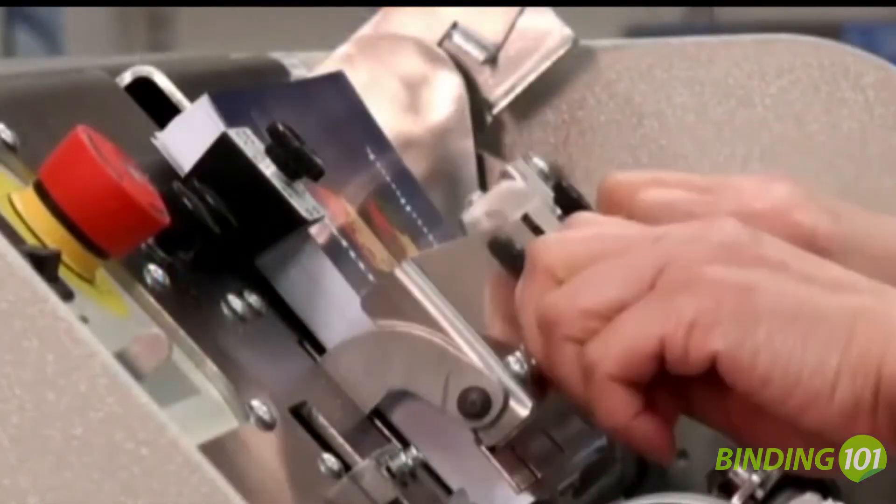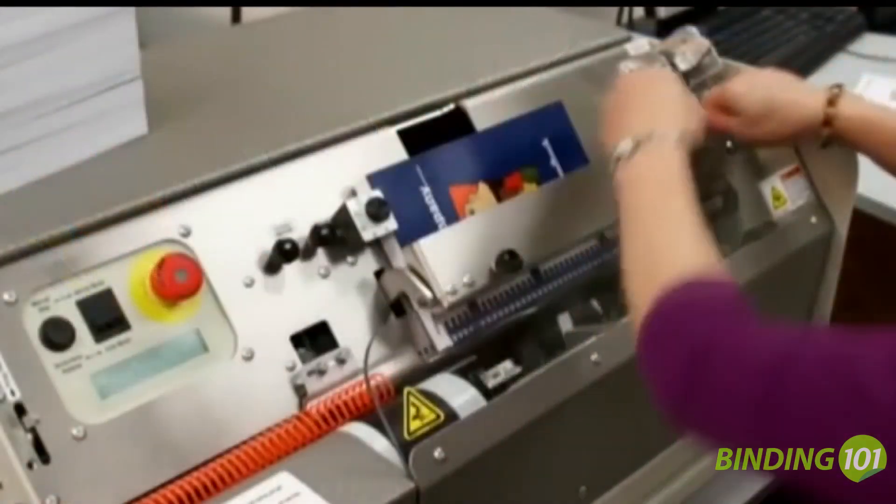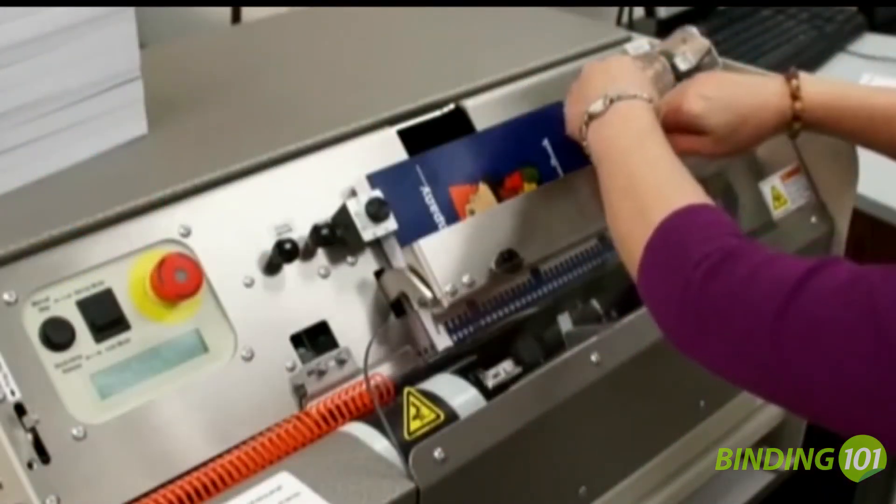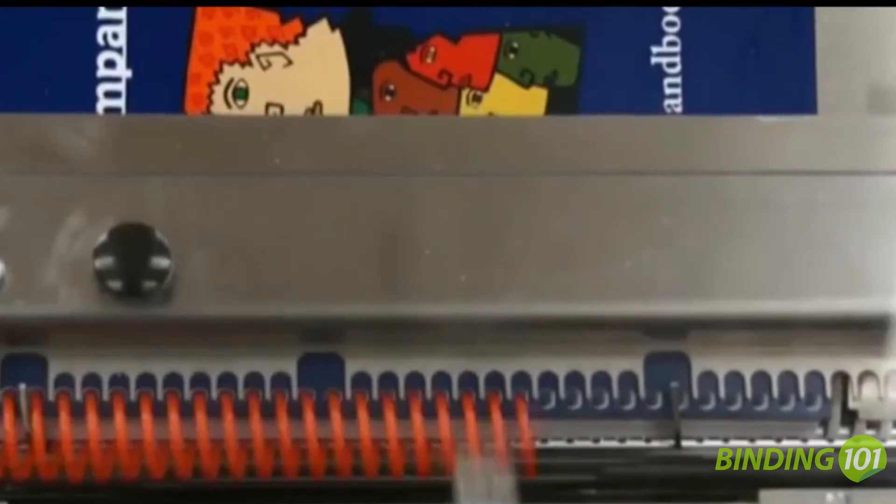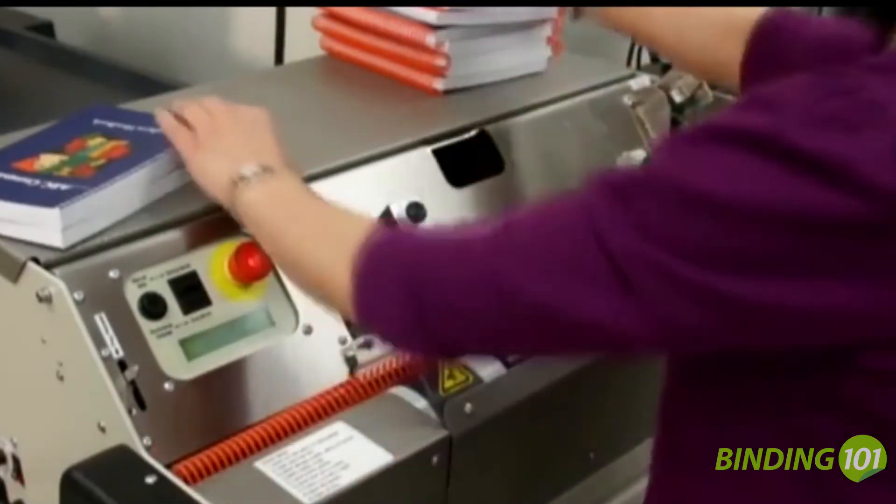The machine's side lay and book clamp work together to make sure each book is perfectly positioned to receive coil. The operator then simply drops a piece of pre-formed pre-cut coil into position, and with a step on the foot pedal, the coil is inserted into the book and both coil ends simultaneously cut and crimped.